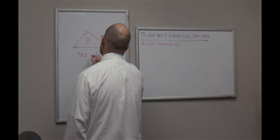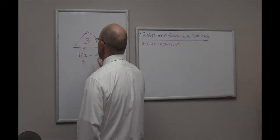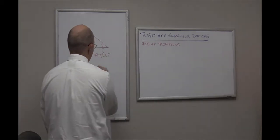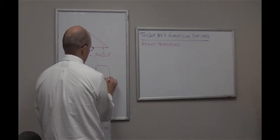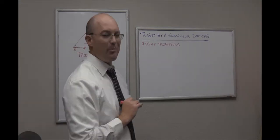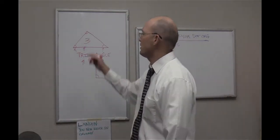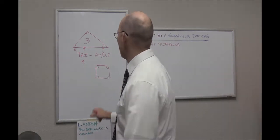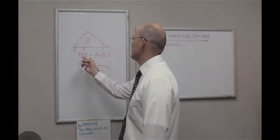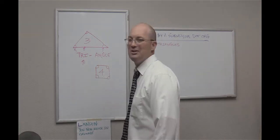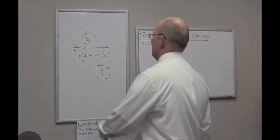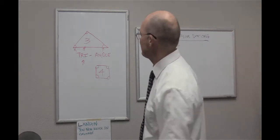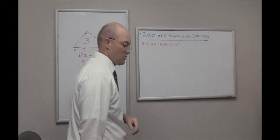Triangle is a compound word: tri means three, angle means angles. A square is also a closed figure — what we call a polygon in geometry. A triangle is a polygon too, a closed figure with straight sides, but a square is not a triangle because it has four angles. It's a quad-angle, not a triangle. So the simple definition of a triangle is a closed polygon with three straight sides and three angles.